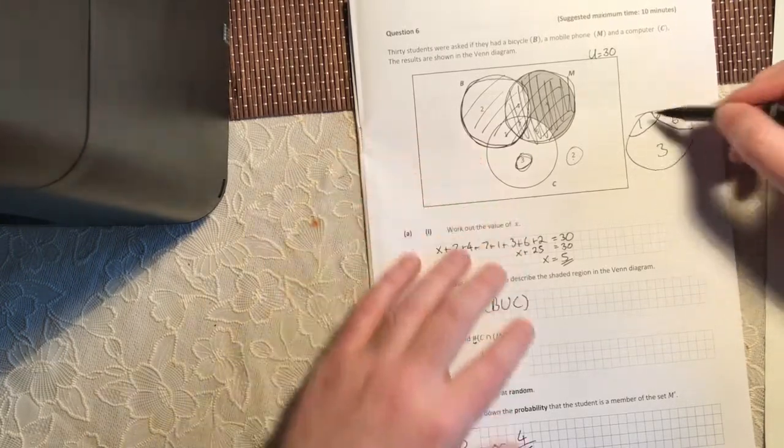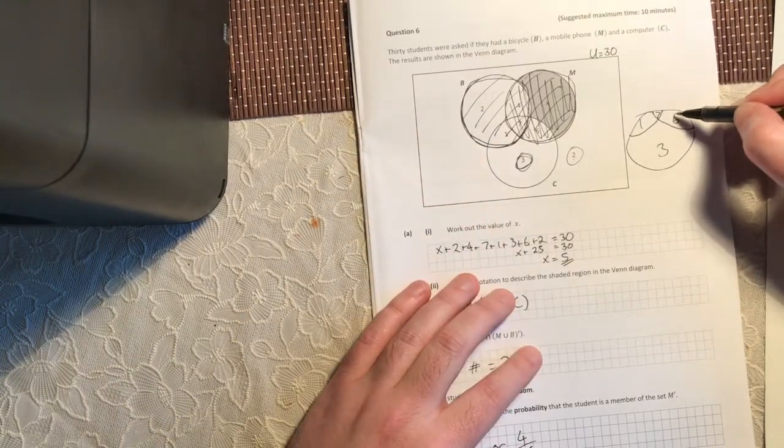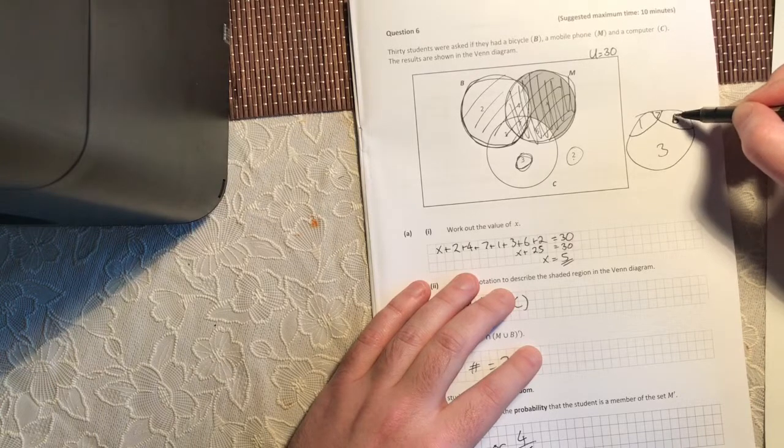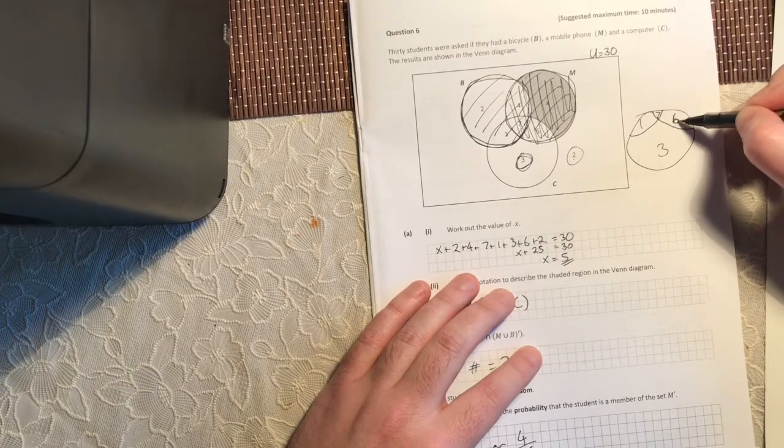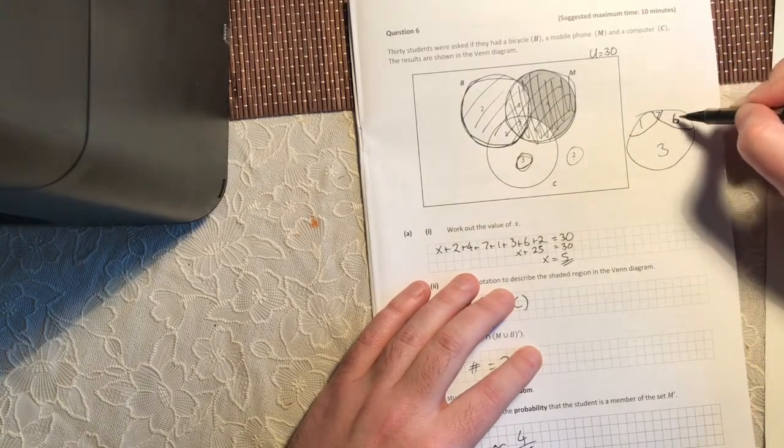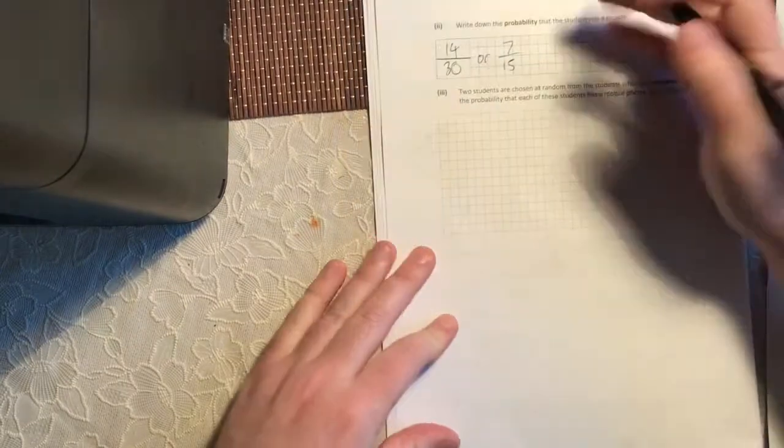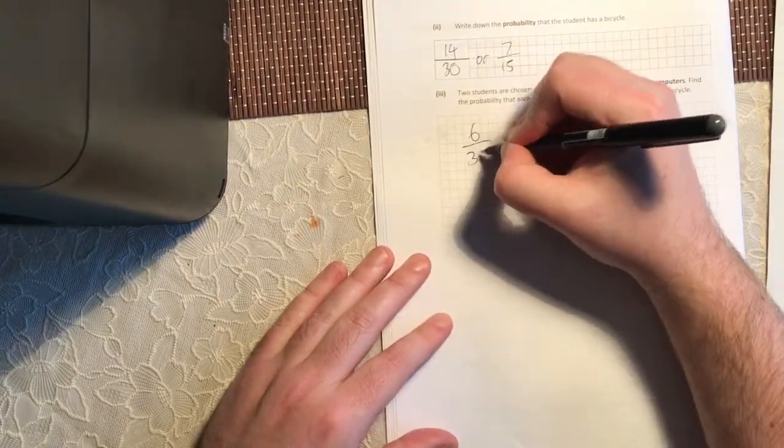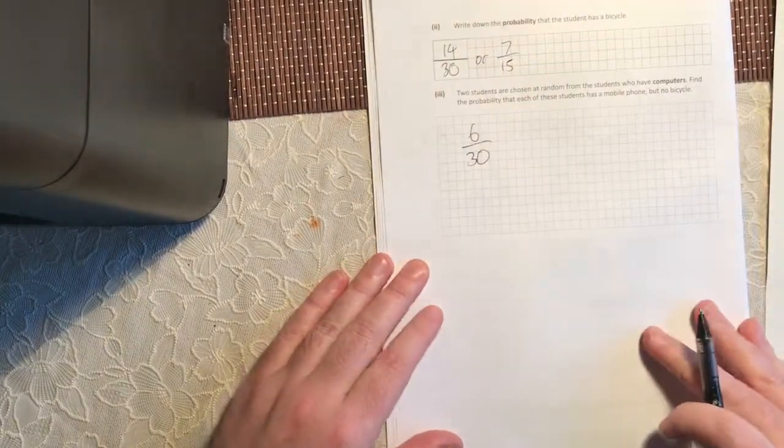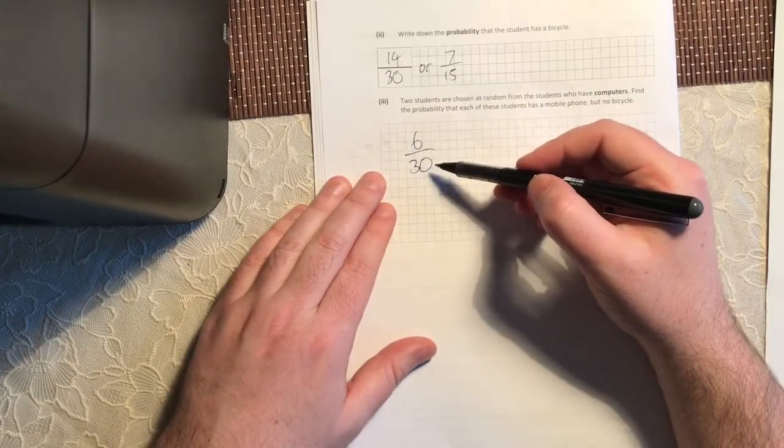So we're interested in computers, but we're only interested in the students who have a computer and a mobile phone but not a bike. So these 6 guys here. So that's 6 out of how many? Well, that's 6 out of 30 people altogether. So that's my first person. So when I pick the first person, I have a 6 in 30 chance.